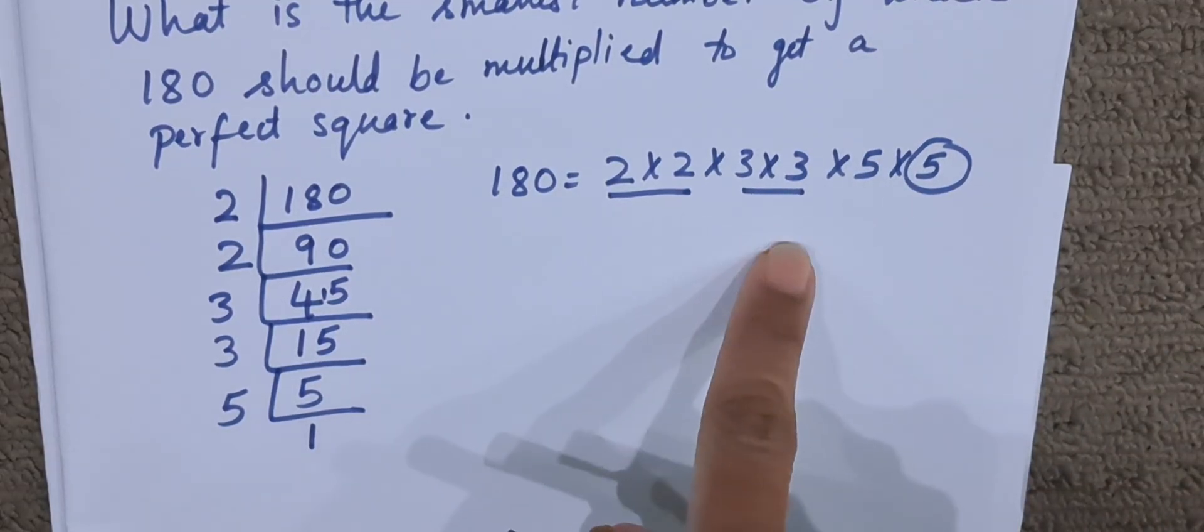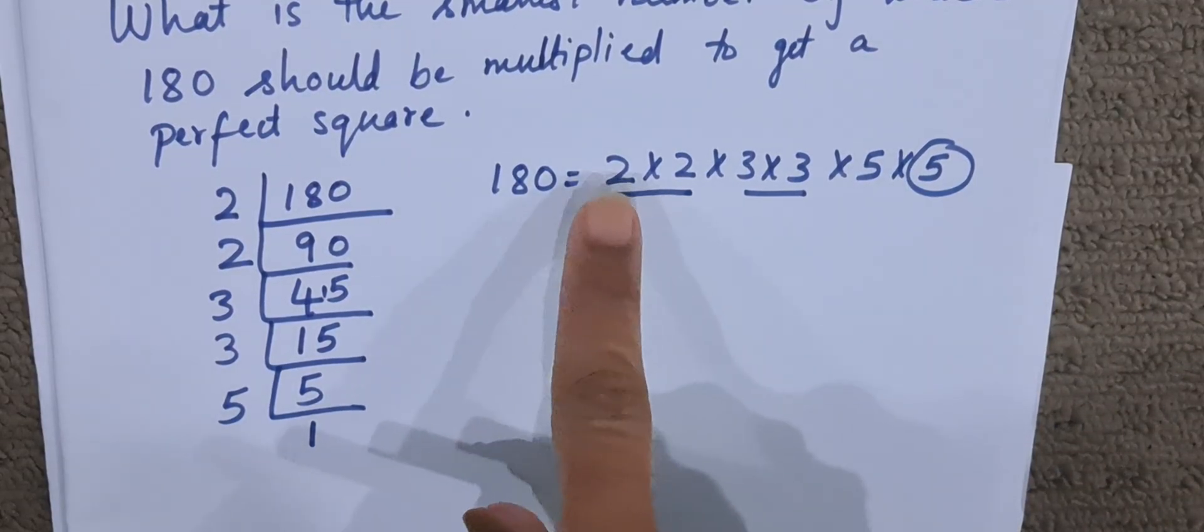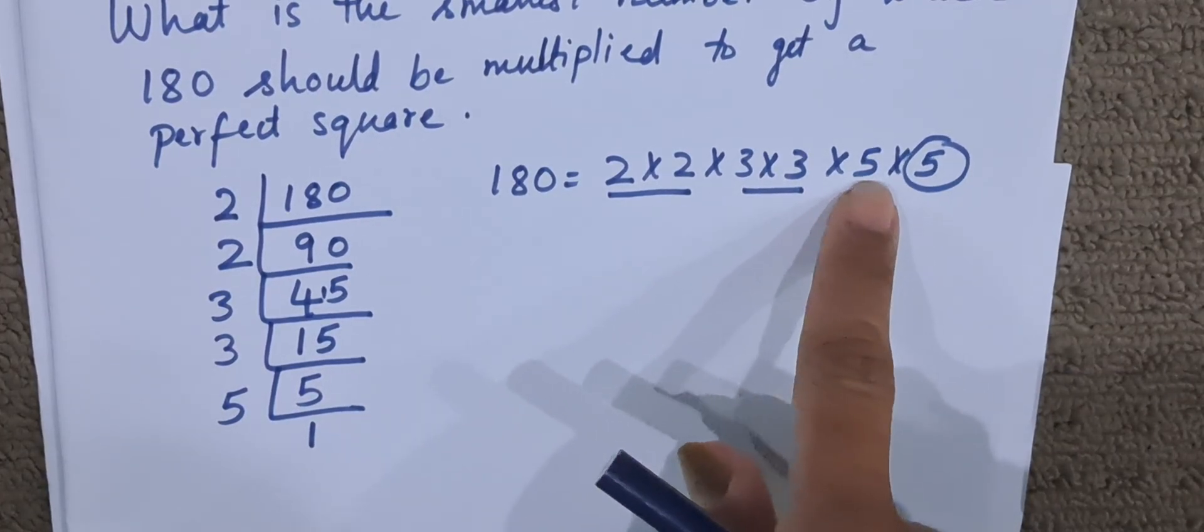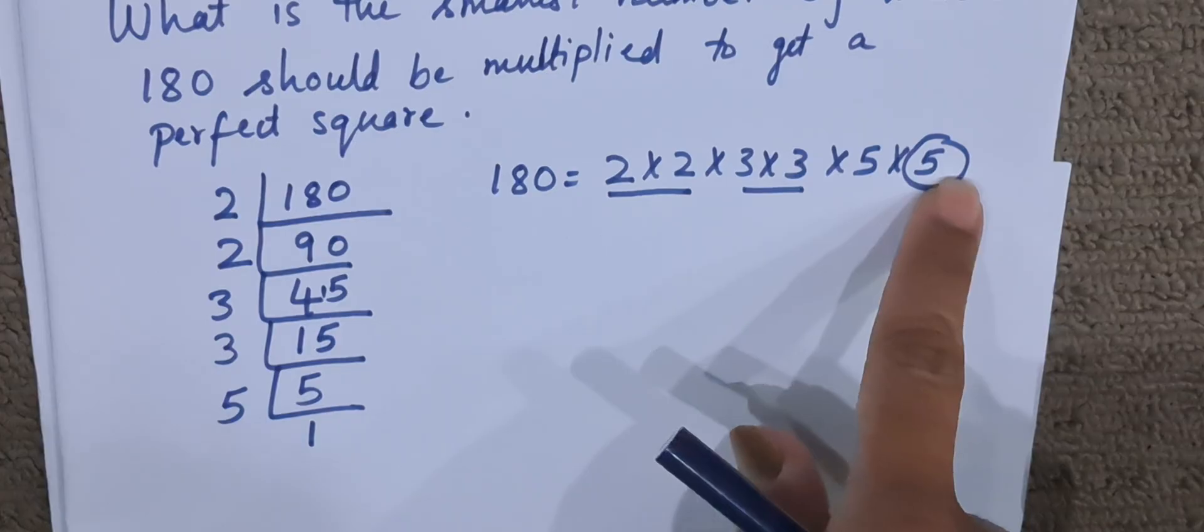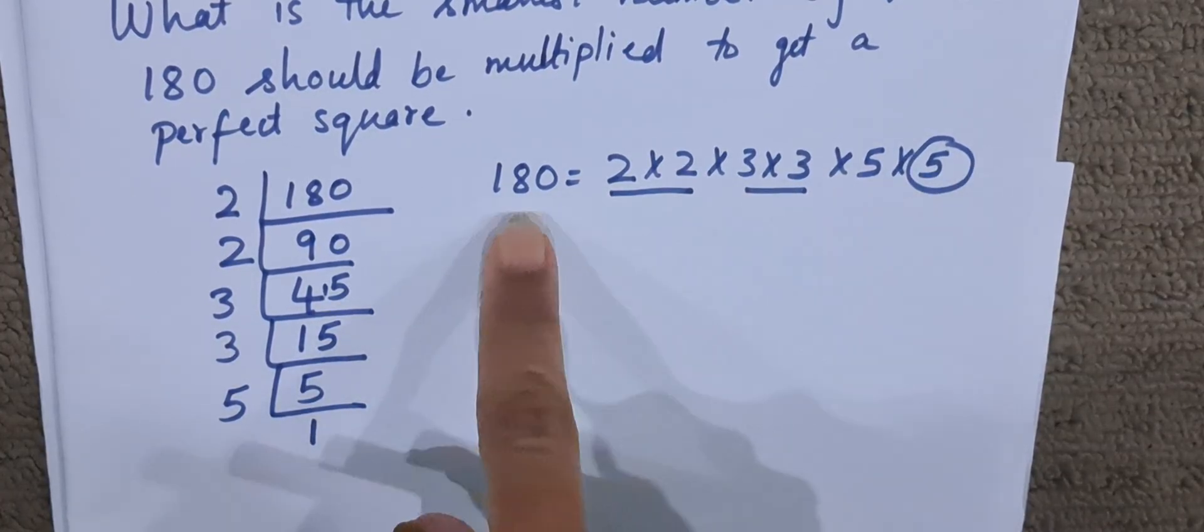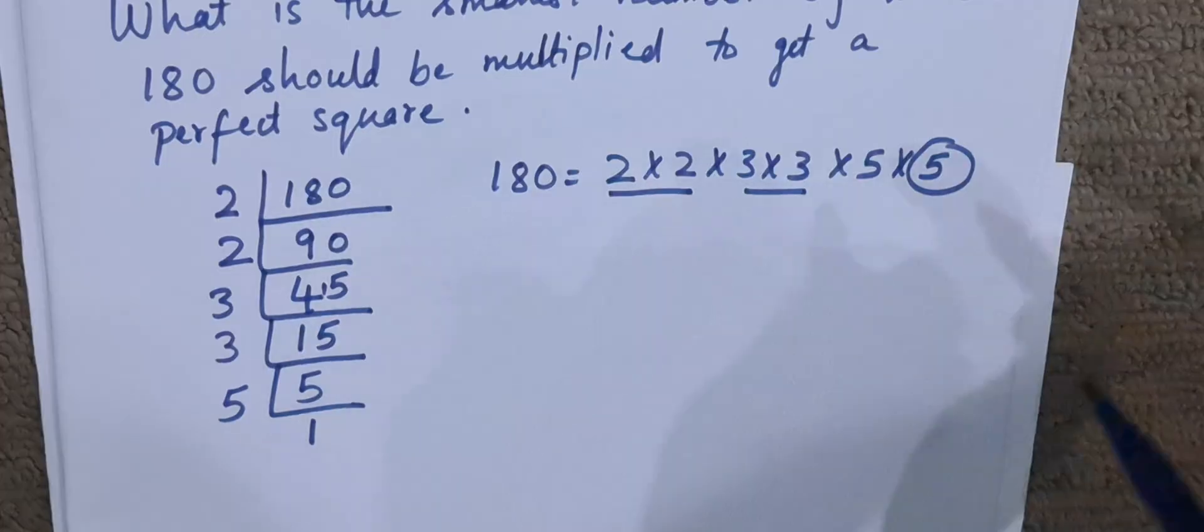So it is 2 × 2, 3 × 3, and 5 is alone. That is, 5 is single. So we have to add one more 5. That is, we have to multiply one more 5 to get a perfect square number.